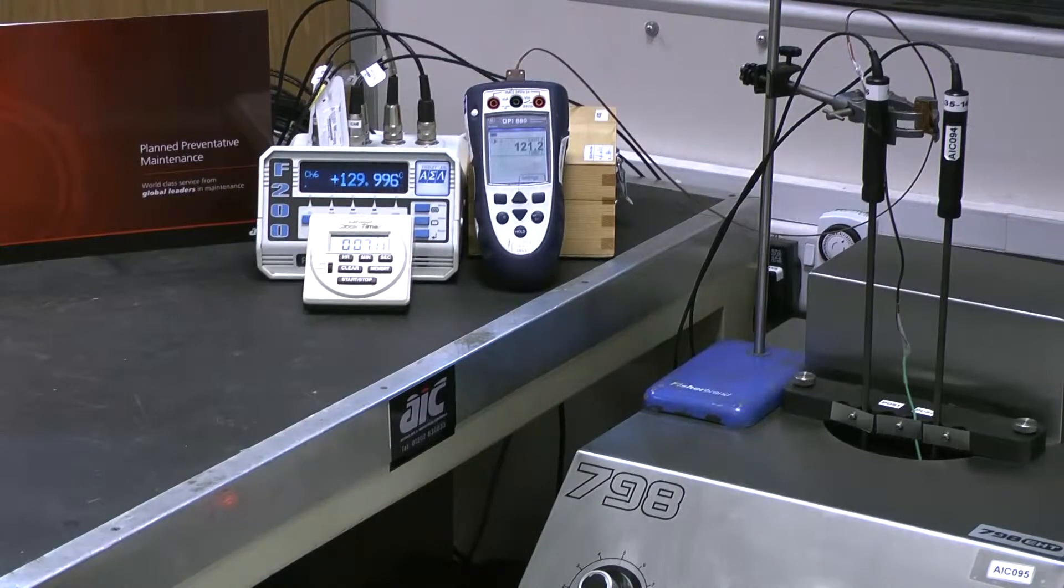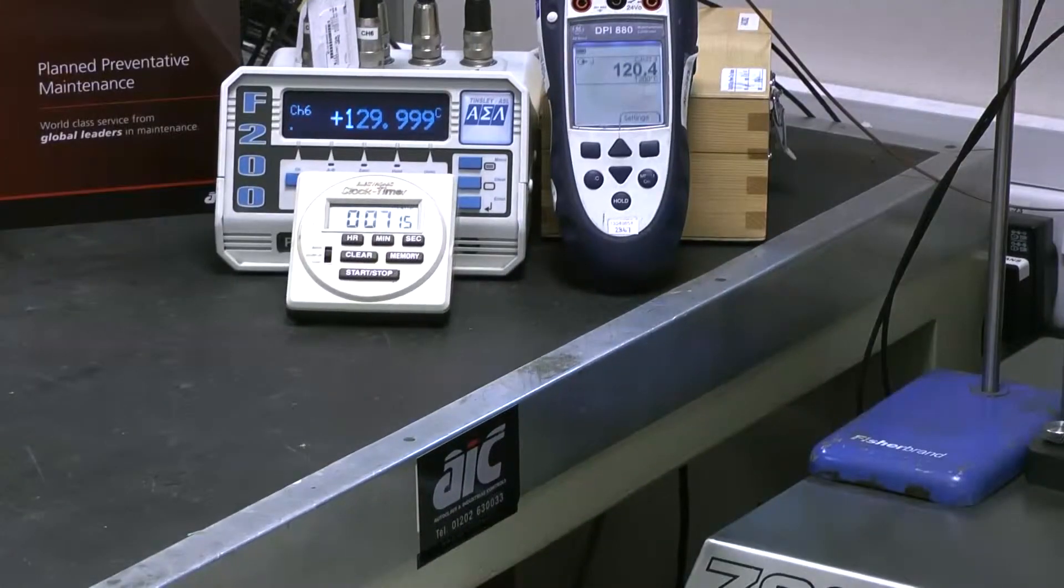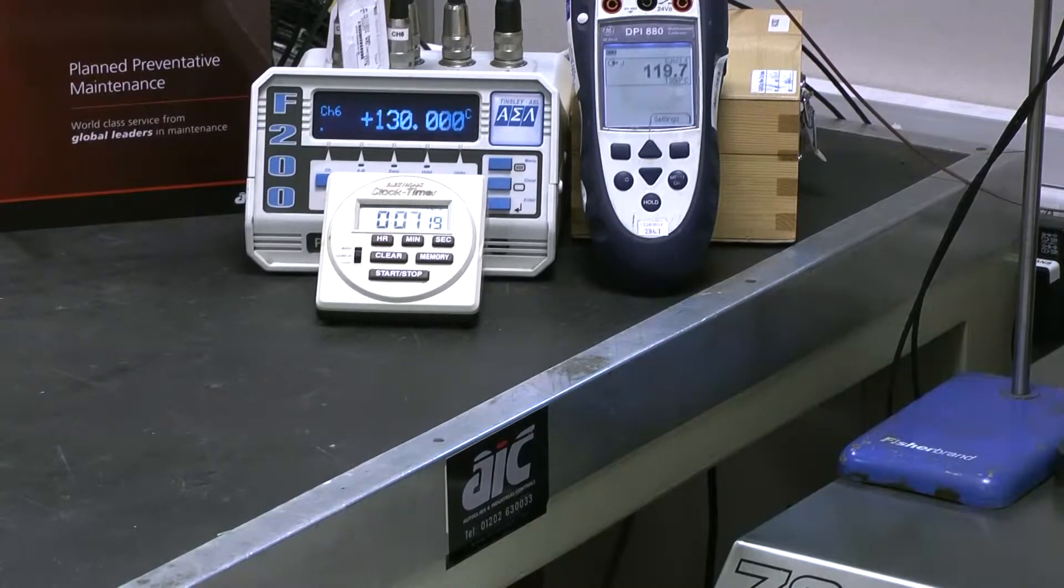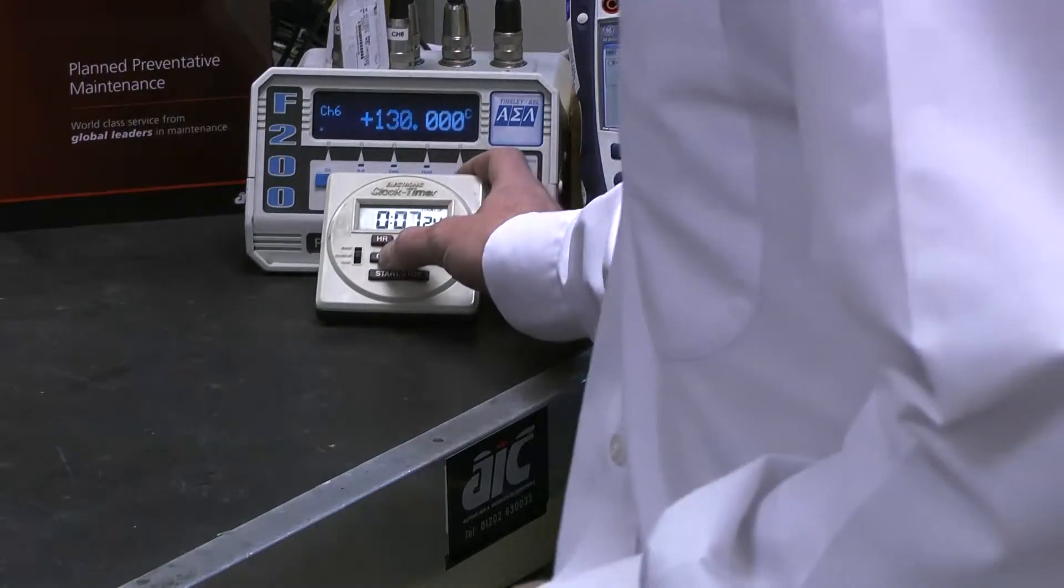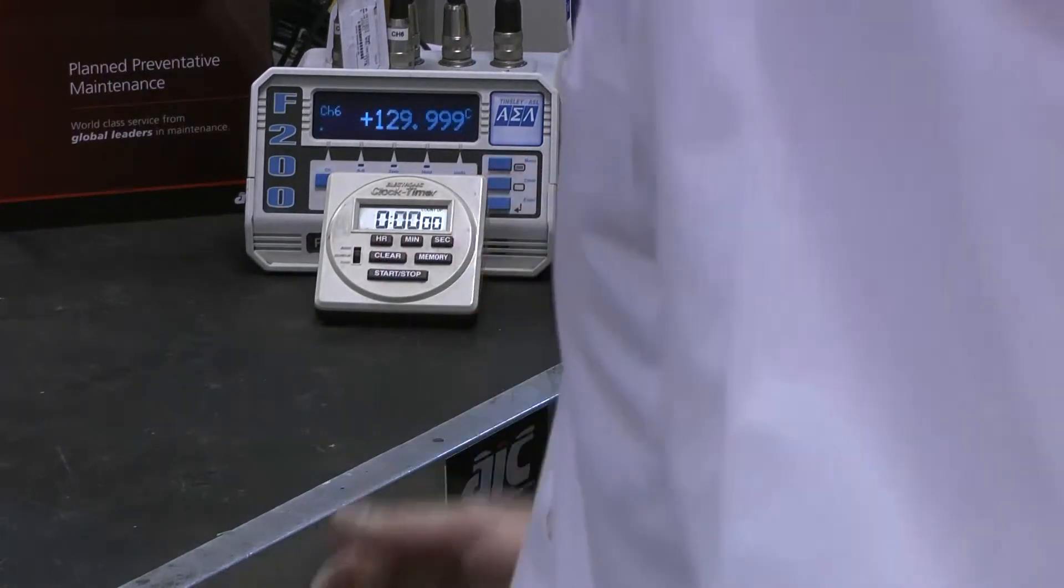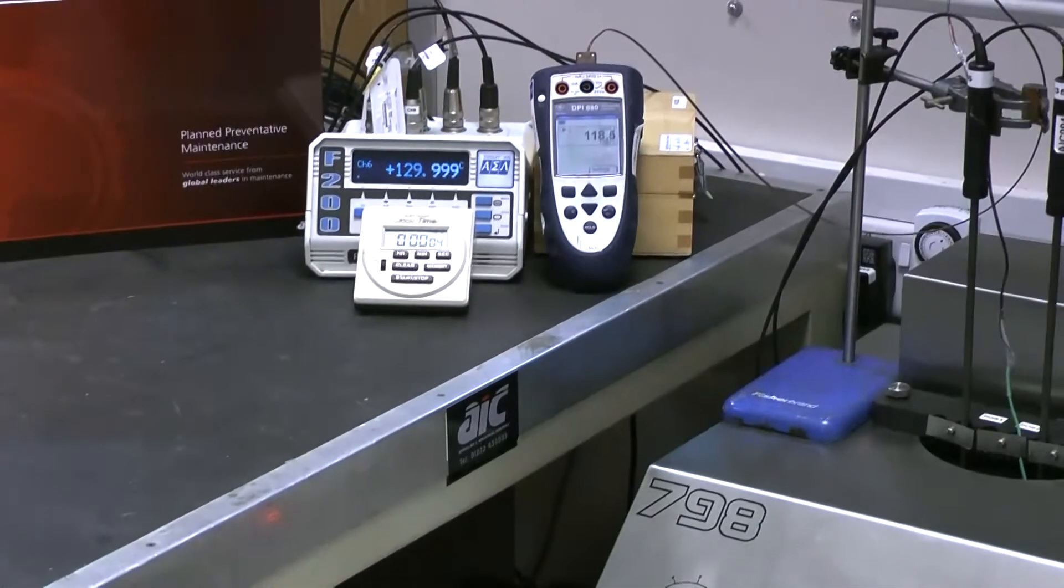And already the reading on our process calibrator is starting to go into error. So what I do, I'm just going to clear and restart the timer and get another five minutes to stabilize at this temperature. So, without fiddling with the wire there.